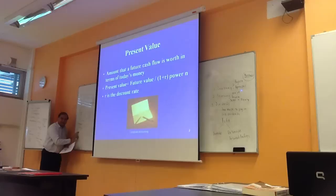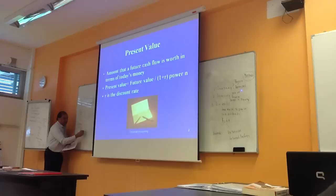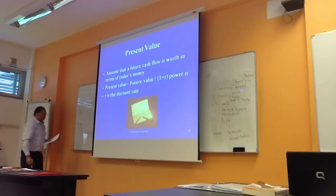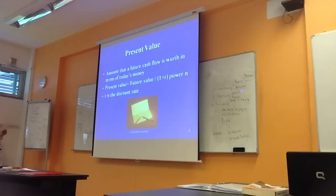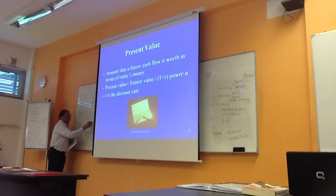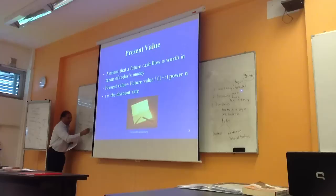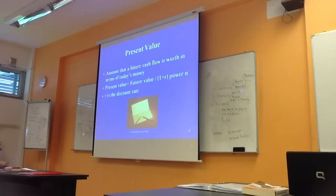To do this we will use a formula. To get the present value, we will take the future value and divide it by (1 + r) to the power of n. This n refers to the number of years, and r refers to a discount rate.